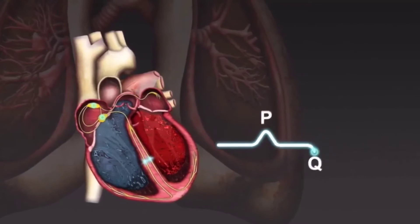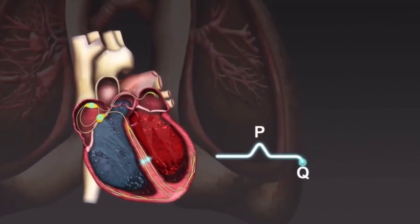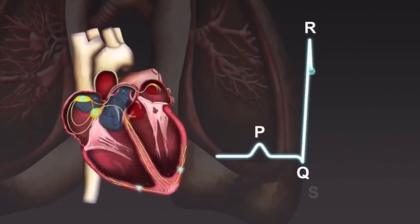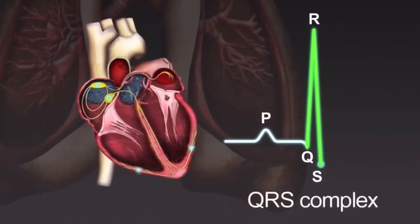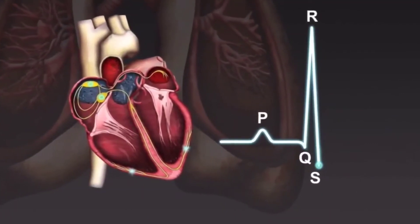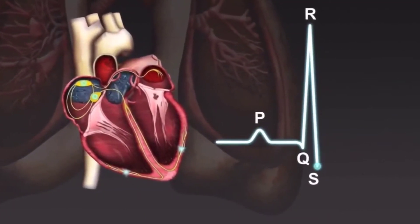The passage of the electrical signal through the ventricles produces a large spike called the QRS complex. The QRS complex is much larger than the P wave, because the ventricles are much larger than the atria and so produce more electrical activity. Most of the QRS complex represents depolarization of the left ventricle, which has much greater mass than the right.